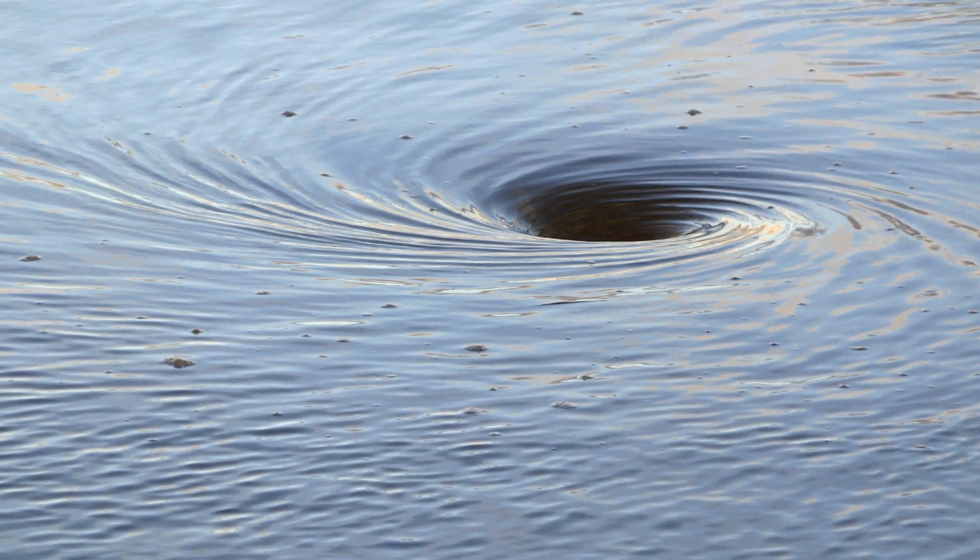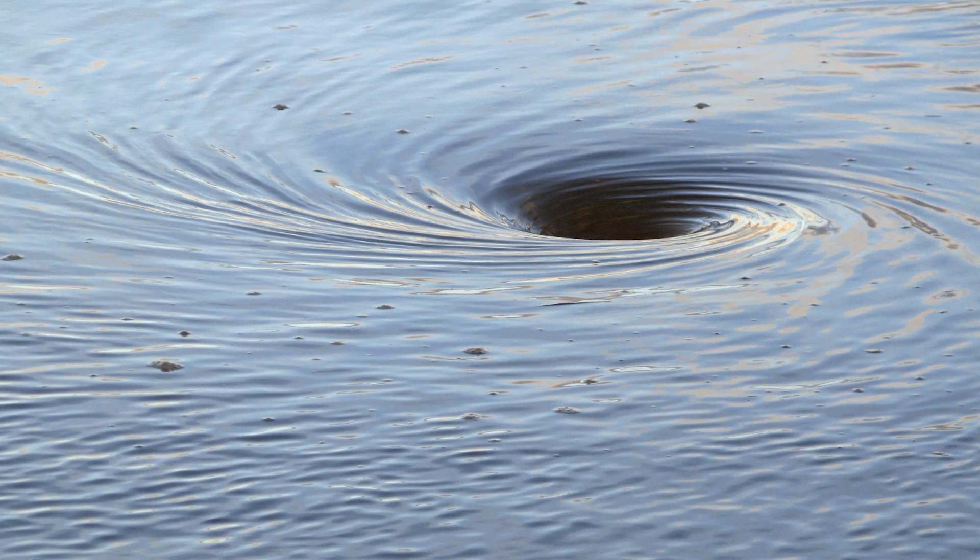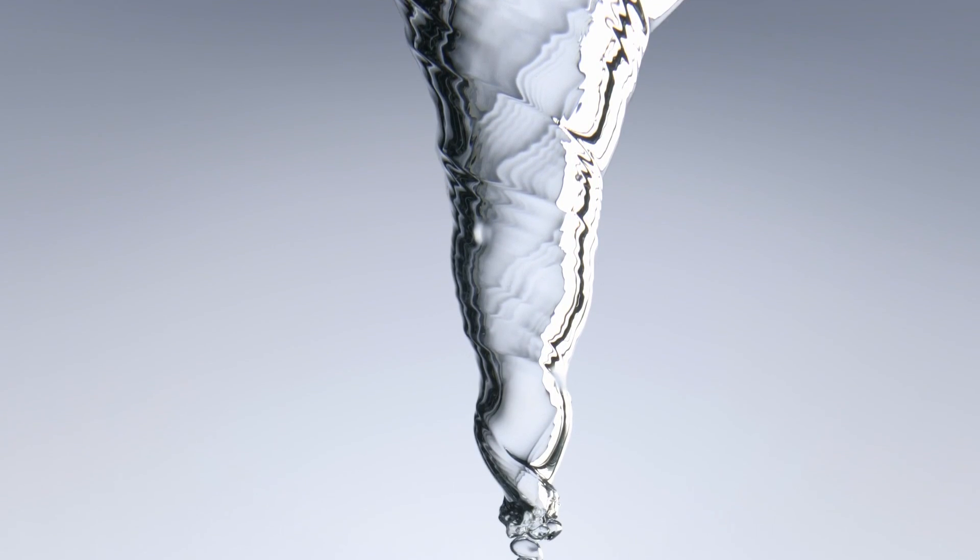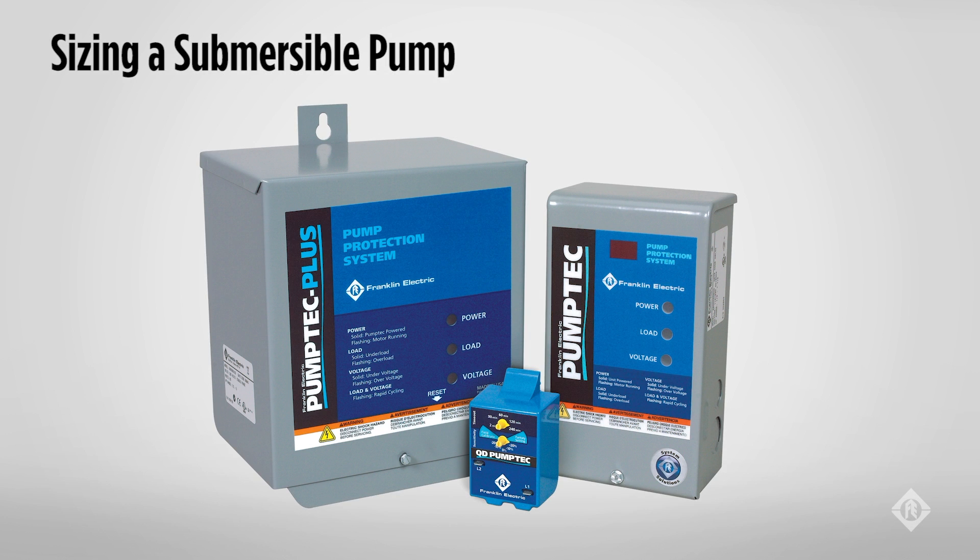Submersible pumps can only lose prime if they vortex, suck air from the surface of the water to the intake, or pump the water down to the intake of the pump, causing the pump to lose prime either way. If a submersible pump loses prime, it will run until it's either turned off by a control or destroys itself from heat.